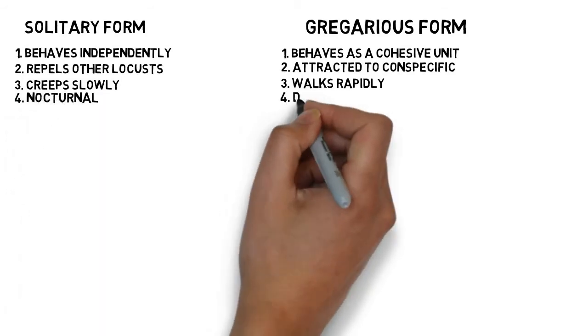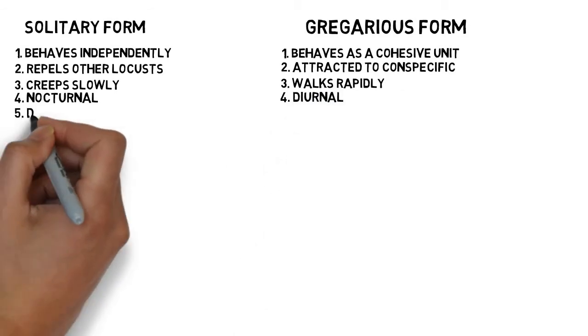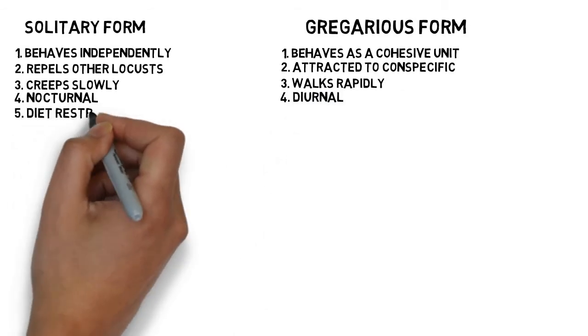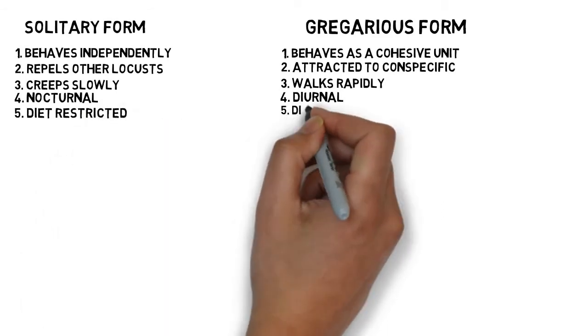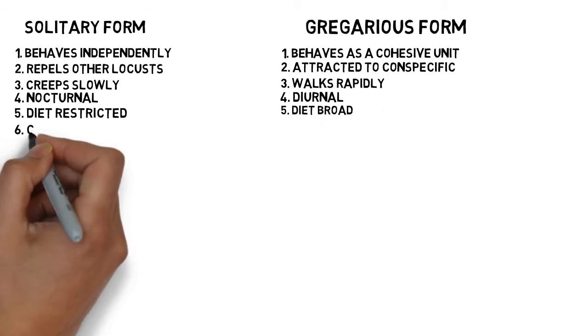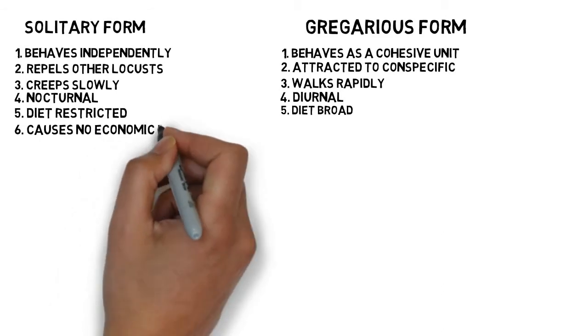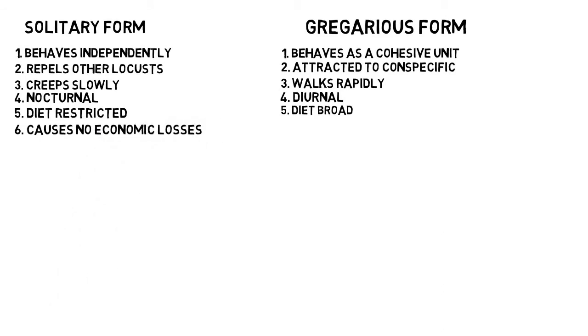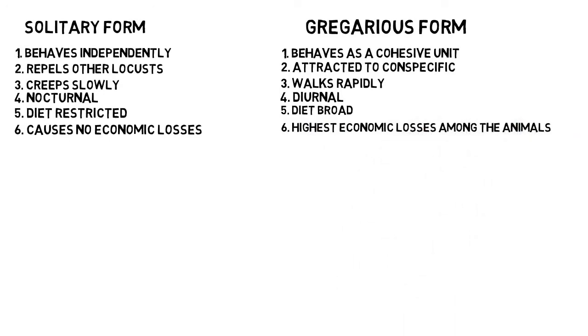Solitary form is active mostly at night, showing nocturnal behavior, whereas gregarious form shows diurnal behavior. Solitary form eats very few varieties of plants and hence is diet restricted, whereas the gregarious form eats a lot of varieties of plants and hence is diet broad. So we can conclude that we have no economic harm by the solitary form, but gregarious form causes the highest economic losses to our crops than any other animal species on earth.